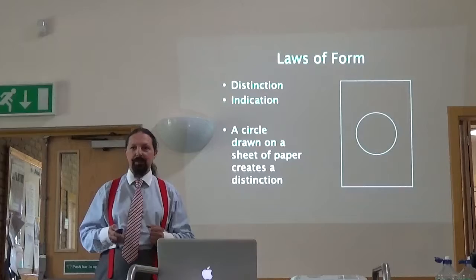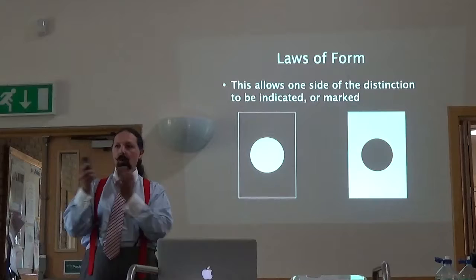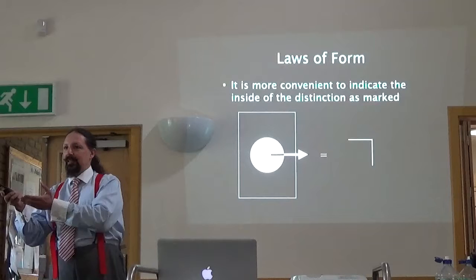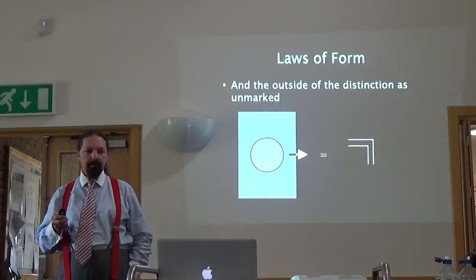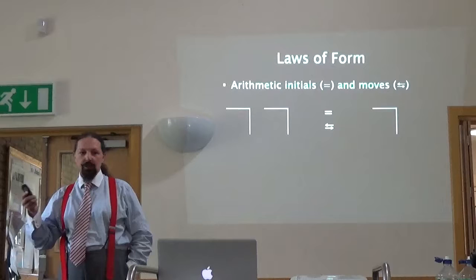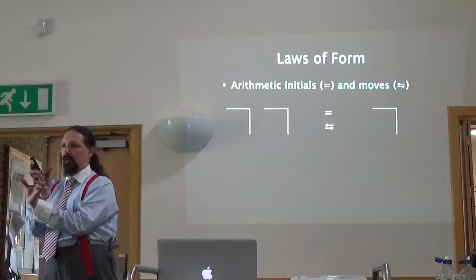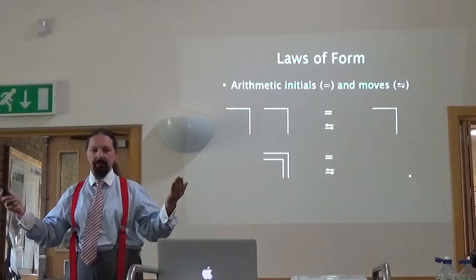A circle drawn on a sheet of paper creates a distinction. This allows one side of the distinction to be indicated or marked — it doesn't matter whether you mark the inside or the outside. Conventionally, it's more convenient to indicate the inside as marked, and the shorthand for that is that upside-down reverse L — the mark. To indicate the outside, we have a mark over mark. Spencer Brown puts forward two sets of arithmetic initials and moves: two marks side by side can condense into one mark, and mark over mark can be rubbed out because it is equivalent to the blank piece of paper.